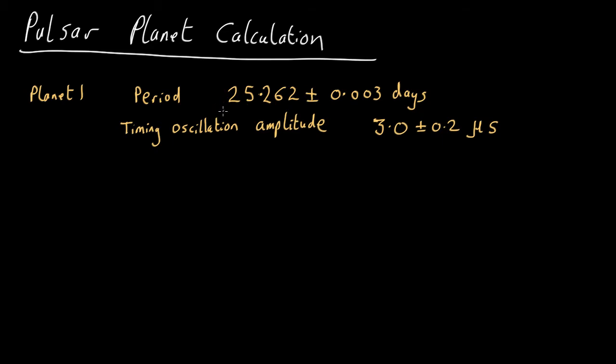This one, the closest in, has a period of 25.262 days. Note the exquisite precision in the timing. The pulsars arrive by plus or minus three microseconds. So it's not a very big effect, but quite big enough for these beautiful pulsar data to measure them.